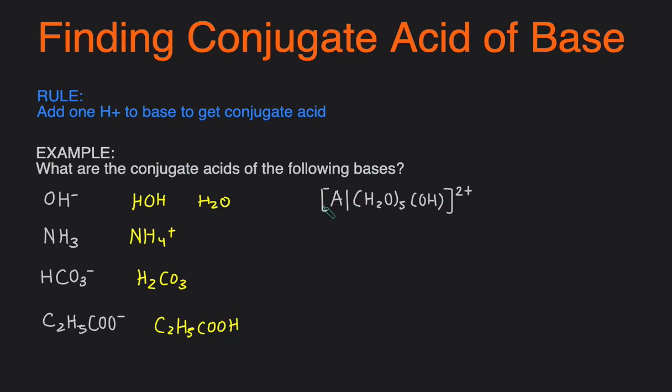And the last one, we have a complex ion. So we add H-positive to it. When we add H-positive to it, the H and OH combine to form H2O. So now instead of having five H2Os, we're going to have six H2Os. And it's going to be a positive 3 charge because it also gained a positive charge.